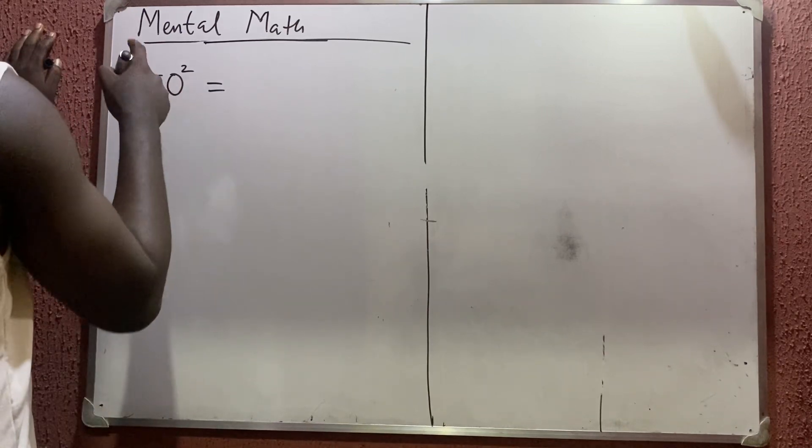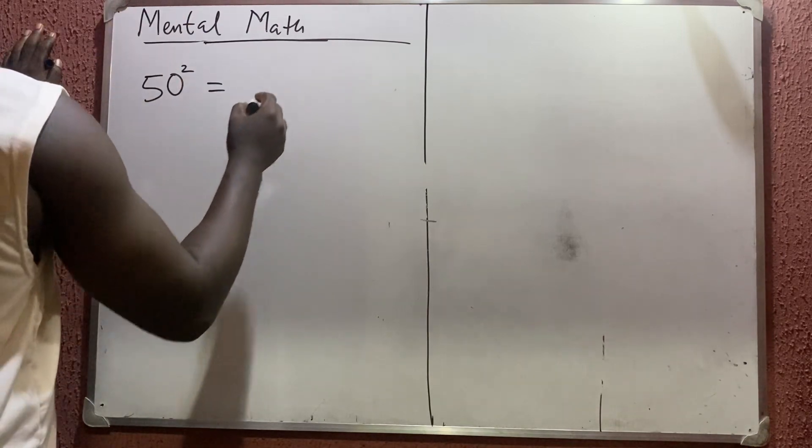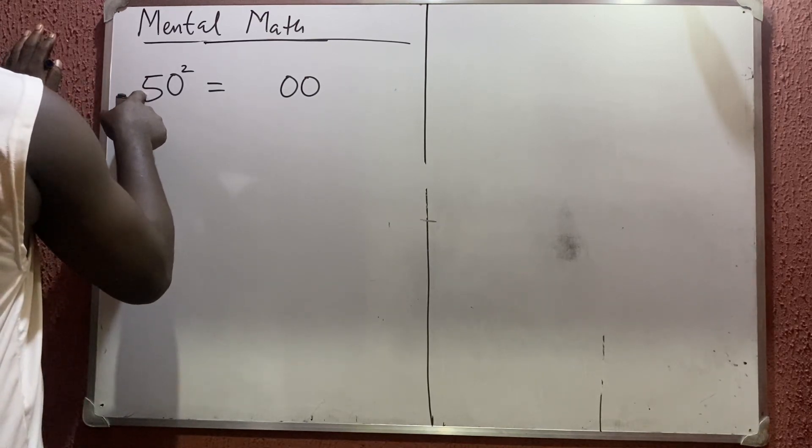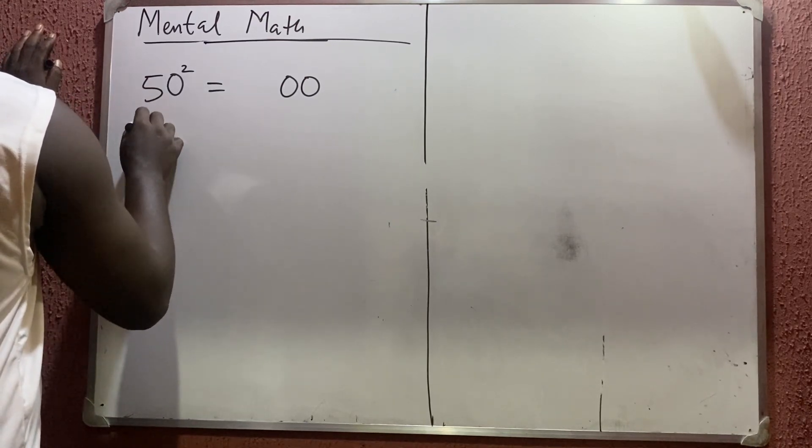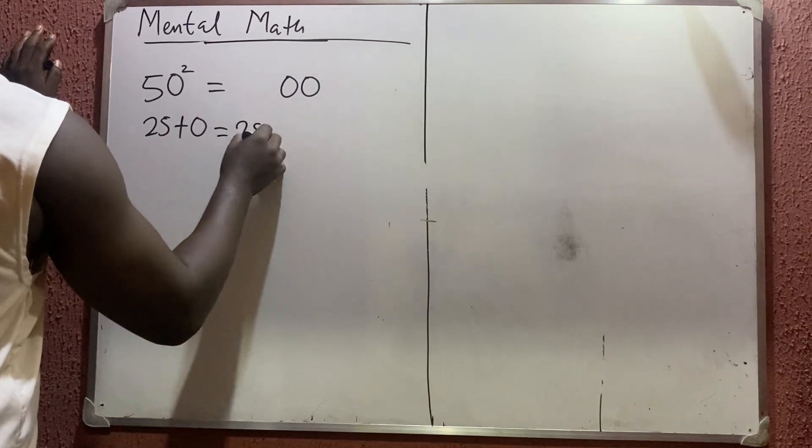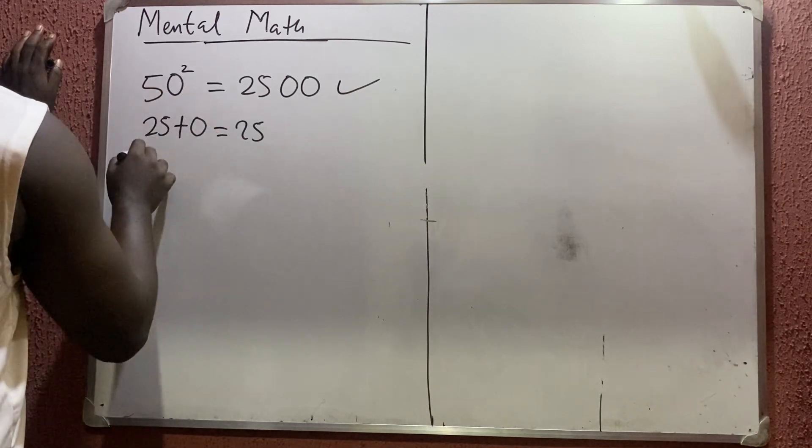But I'm going to always write the number you are squaring as a two-digit number. So zero as a two-digit number means 00. Then square the five: 5² is 25. You say 25 plus this zero, which gives you 25 again. So you put that 25 here. This is the answer. You may not understand with just this, so let's do 51.